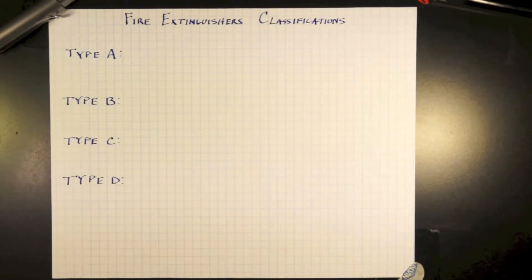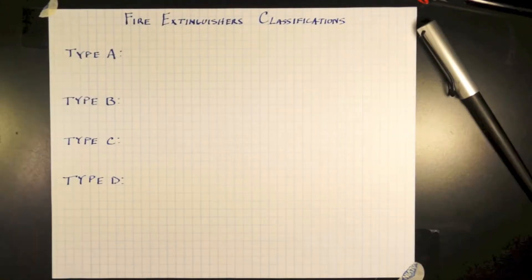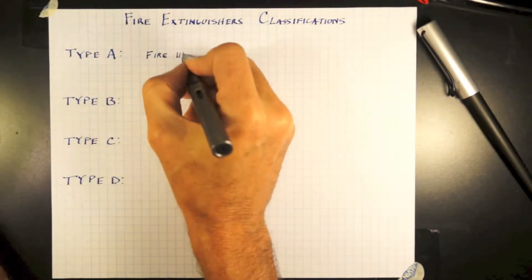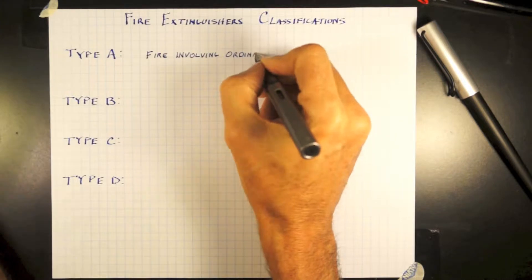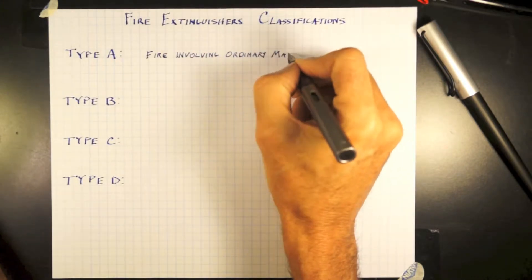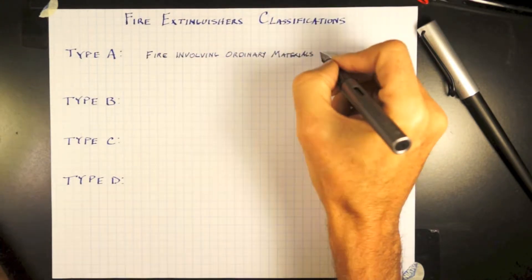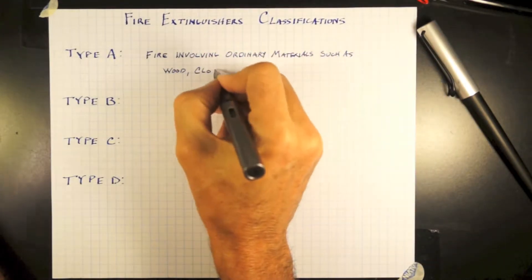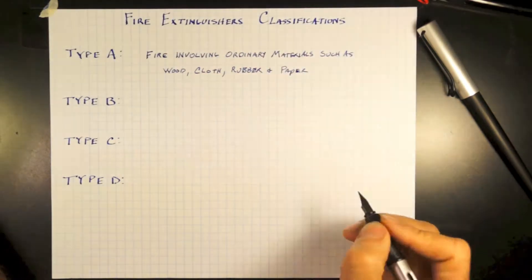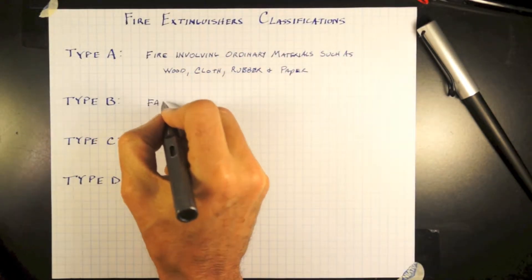Type A fire extinguishers extinguish normal ordinary materials such as wood, clothing, rubber, and paper.